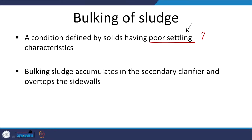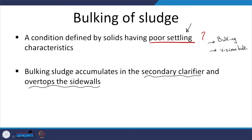In general we want a good ratio of filamentous to floc-forming microbes. If you have just floc-forming pin flocs that is going to be an issue. We typically see poor settling characteristics in the secondary clarifier or secondary sedimentation tank, and sometimes the situation is so severe that it can overflow. Different sources distinguish between bulking, viscous bulking, and foaming.